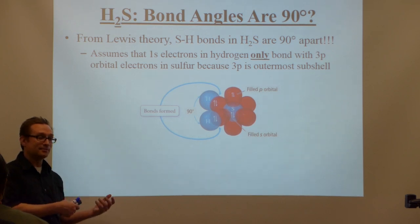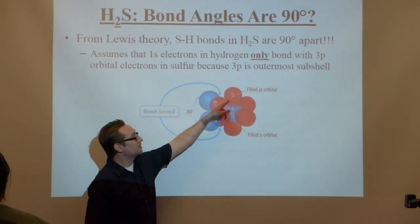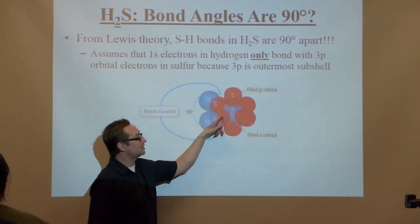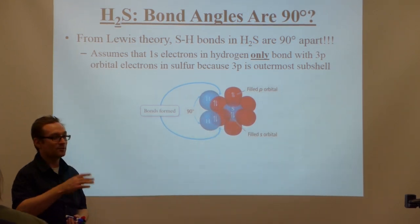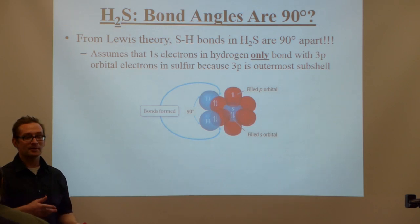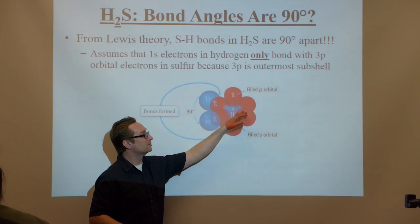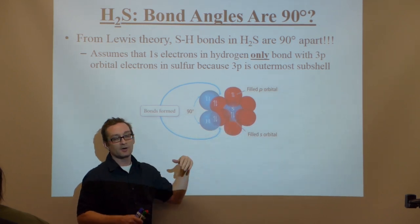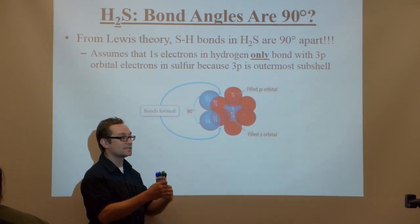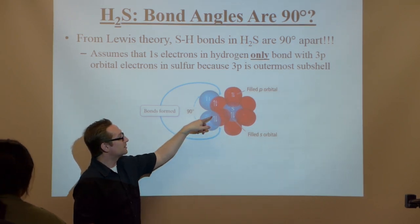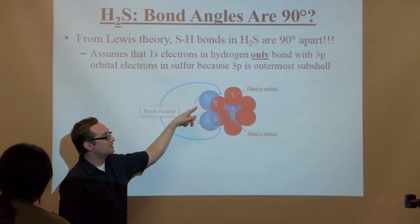If you look at this picture, here's the 3px, here's the 3py, and this might be the 3pz orbitals. Going back to quantum numbers, −1, 0, +1 are the possible orientations for any P orbital. The P orbitals are said to be 90 degrees apart from each other. Because the P orbitals are 90 degrees apart along the X, Y, Z axes, you would think that the bond angle between H–S–H would be exactly 90 degrees. You would think that the bond angles should correspond to the atomic orbitals being used to bond.